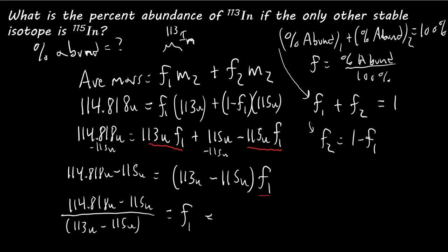If we plug that into the calculator, 114.818 minus 115, divided by 113 minus 115. And, you should get a positive number. If you get a negative number, then you've done something wrong. It's 0.091 is the fractional abundance.